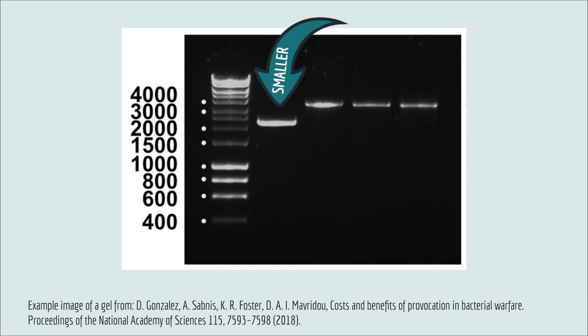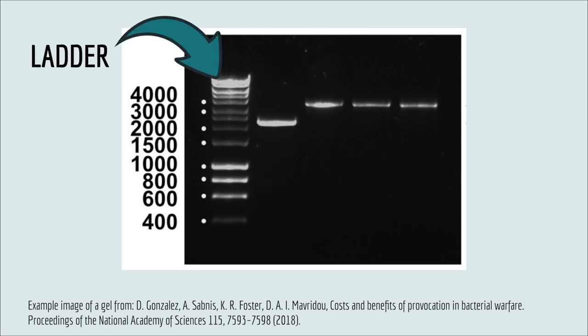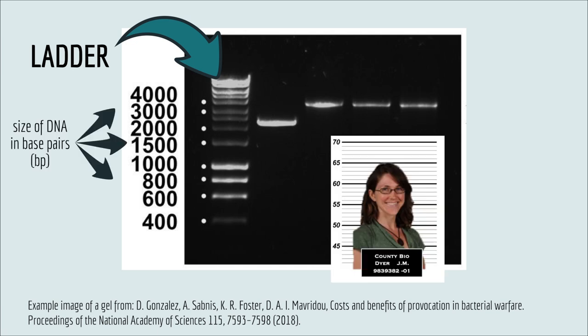The smaller DNA pieces, like this one, moved faster, so they're closer to the bottom of the gel than the bigger pieces. This, over here, is the ladder, which has known sizes of DNA and is used like a ruler in a mugshot to tell how big the other pieces of DNA are.